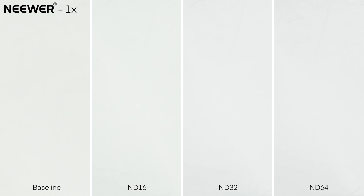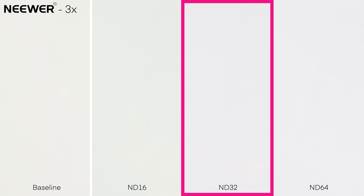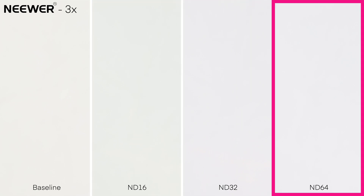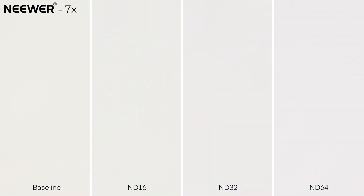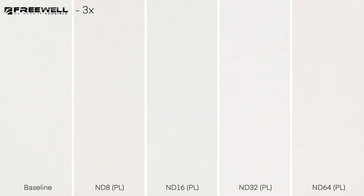The Newer filters performed really well at 1x with minimal shift. At 3x, there was a little green at ND16, a little purple at ND32, and a slight color temperature shift at ND64. At 7x, the filters were solid and well within the margin of error. The Freewell kit impressed the most, with very little change at 1x, 3x, and 7x across the board from ND8 all the way to ND64. Very impressive for a kit that wasn't the most expensive and came with eight filters.